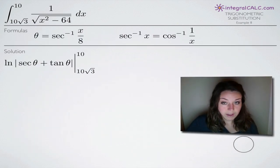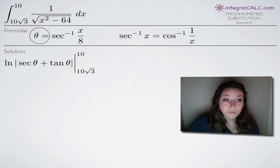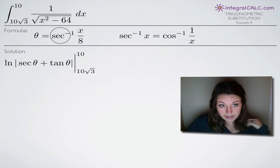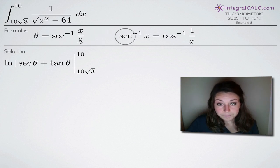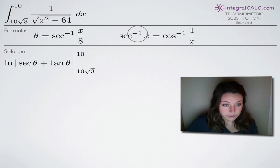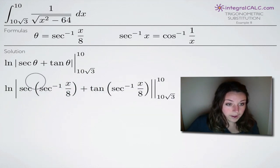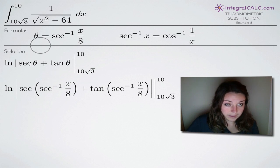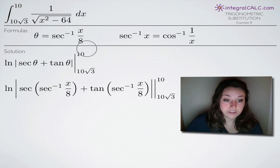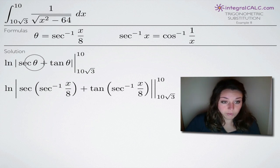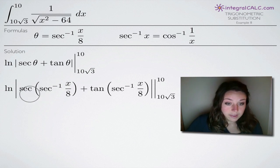To start evaluating, we'll use two formulas. Remember when we set up this problem, we solved for theta and got the inverse secant function of x over 8. So we substitute that back in, plugging the inverse secant of x over 8 for theta in both the secant and tangent terms.